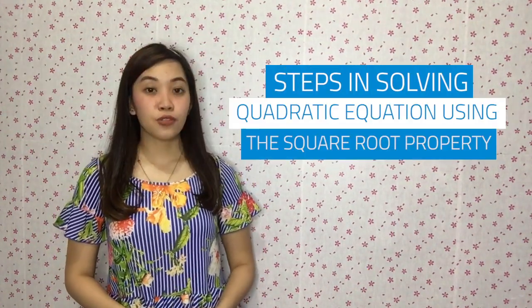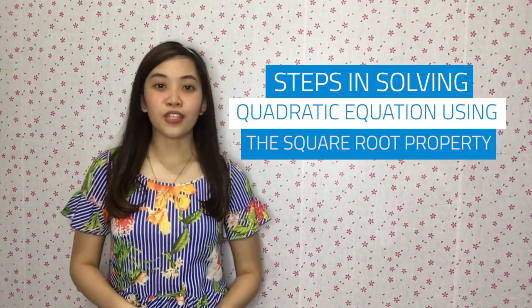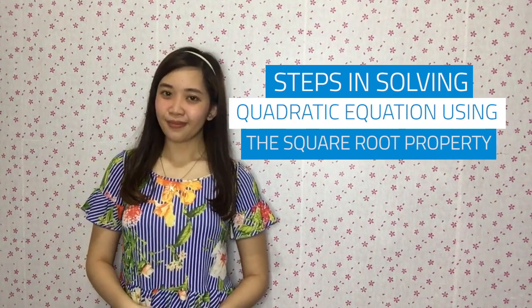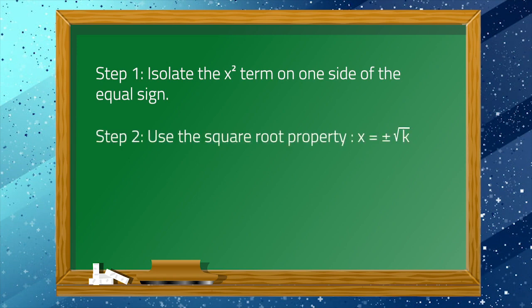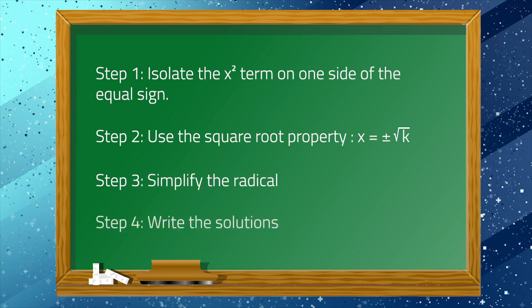Now let's proceed to the steps in solving quadratic equations using the square root property. Step 1: Isolate the x squared term on one side of the equal sign. Step 2: Use the square root property — x equals plus or minus the square root of k. Step 3: Simplify the radical. Step 4: Write the solutions.